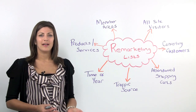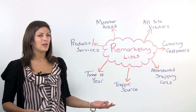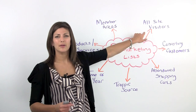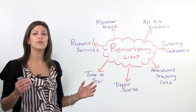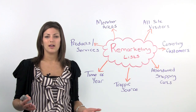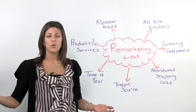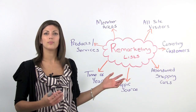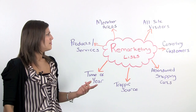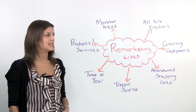What I want to talk about today is the different types of lists that you can create, because most people that are setting this up are just going with the simple approach of putting code on every page of the site, so you're targeting all of your site visitors. Now this is great if you've got a small site or you don't offer too many products or services, and you can literally just follow all the people around that have been on your website. But you can actually get really targeted, so that's what I want to go into more detail on today.